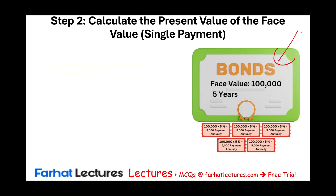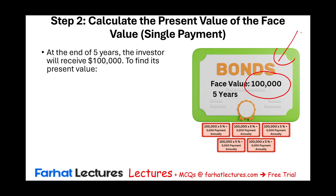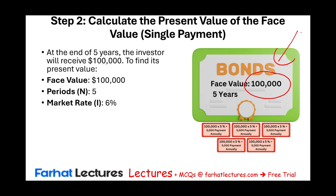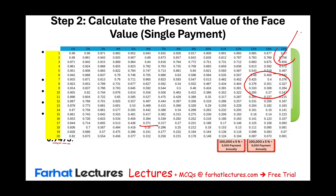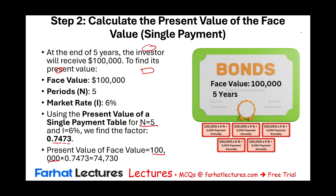Next, we need to find the present value of the $100,000 face value. You receive the face value only once, at the end of five years. The face value is $100,000, the number of periods is five, and the market rate is again 6%. We use the present value of a single amount table with n=5 and i=6%, and the factor is 0.7473. Therefore: $100,000 times 0.7473.